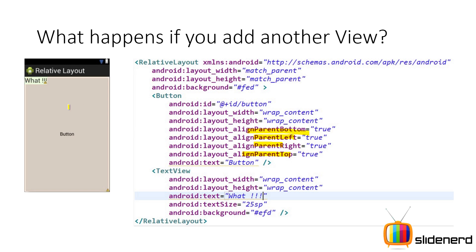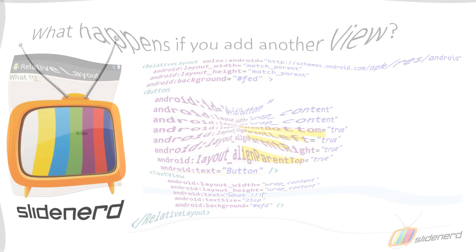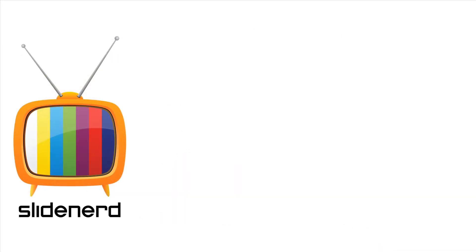You are also going to see what relation can be specified between two views with respect to each other. For example, I can say this text view should appear above the button, or to the left side, the right side, or below the button. There are more attributes for dealing with that, and in the next video I'm going to talk about those in detail. If you like what you saw please subscribe to my channel, comment, and let me know your thoughts. Thanks for watching — I will catch you guys later. Have a nice day.